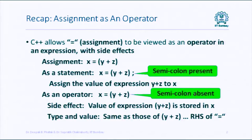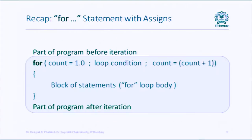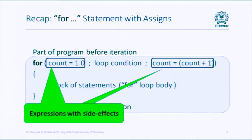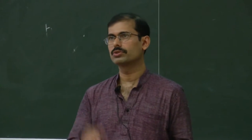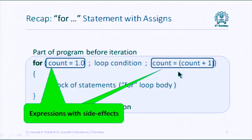With the assignment symbol, you can write assignment expressions as a side effect of which you get the actual assignment of a value to a variable. So in a for statement, if you say count = 1.0 in the initialization and count = count + 1 in the update, these are really assignment expressions with side effects. The first expression is evaluated once before you enter the loop; the last expression is evaluated at the end of every iteration, and its side effect also happens at the end of every iteration.